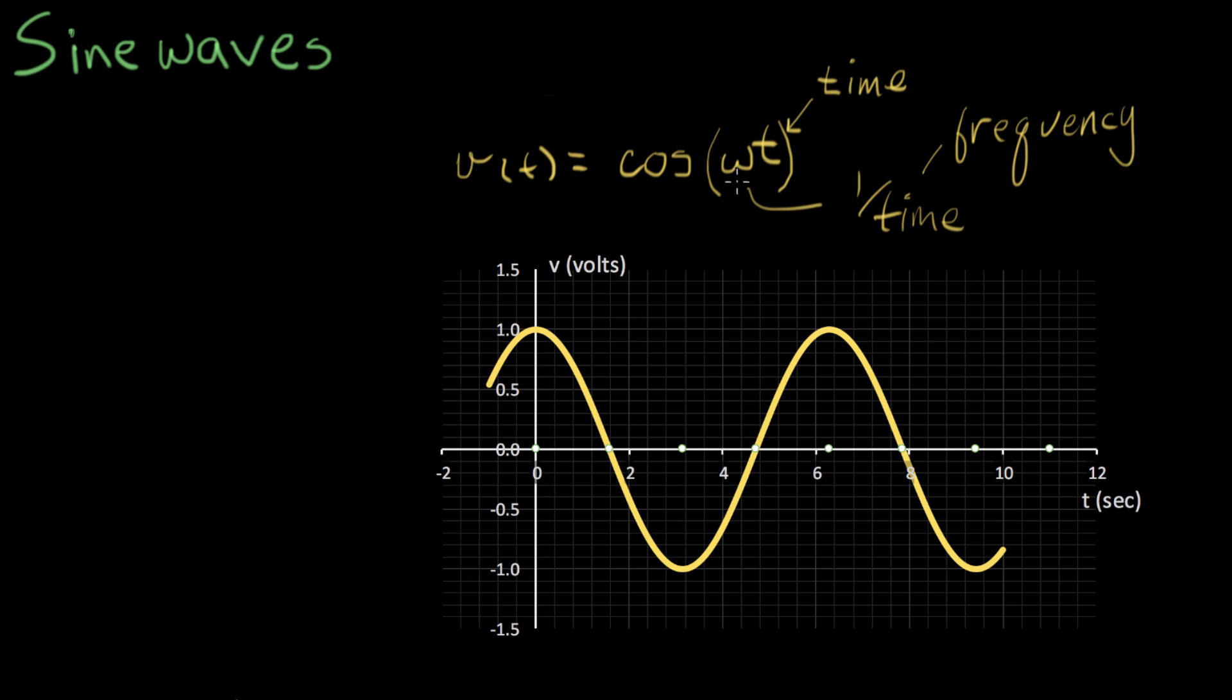This is a constant number. This is some number. Time is a number that increases all the time. And so when we have that cosine, we now have something we call a cosine wave, or a sine wave, or a sinusoid. And that sine wave goes on as time increases. It keeps going and going and going.